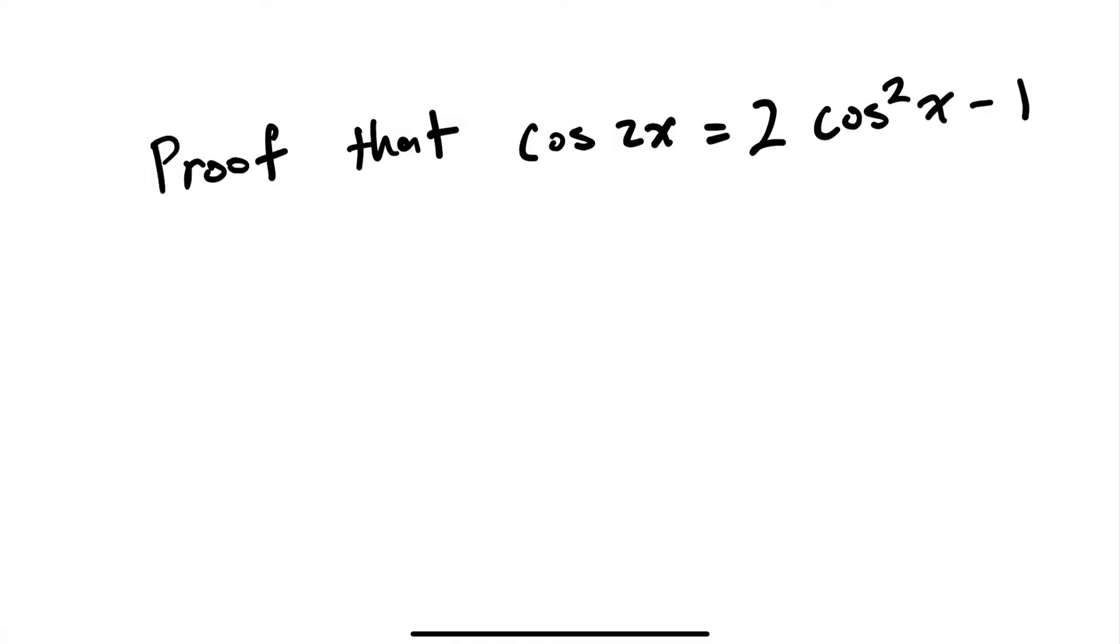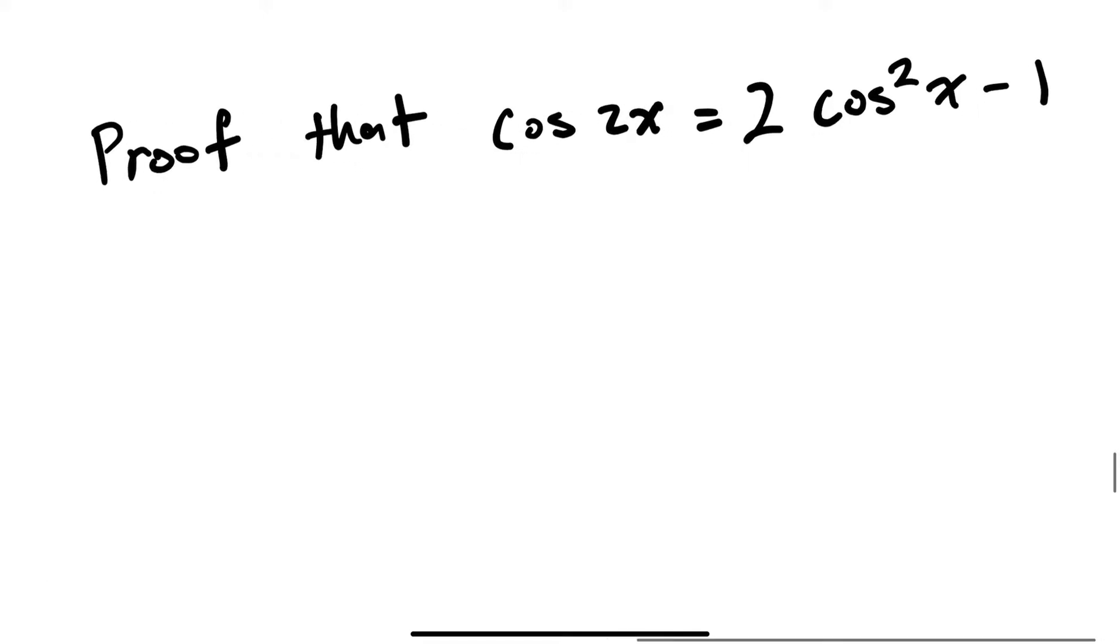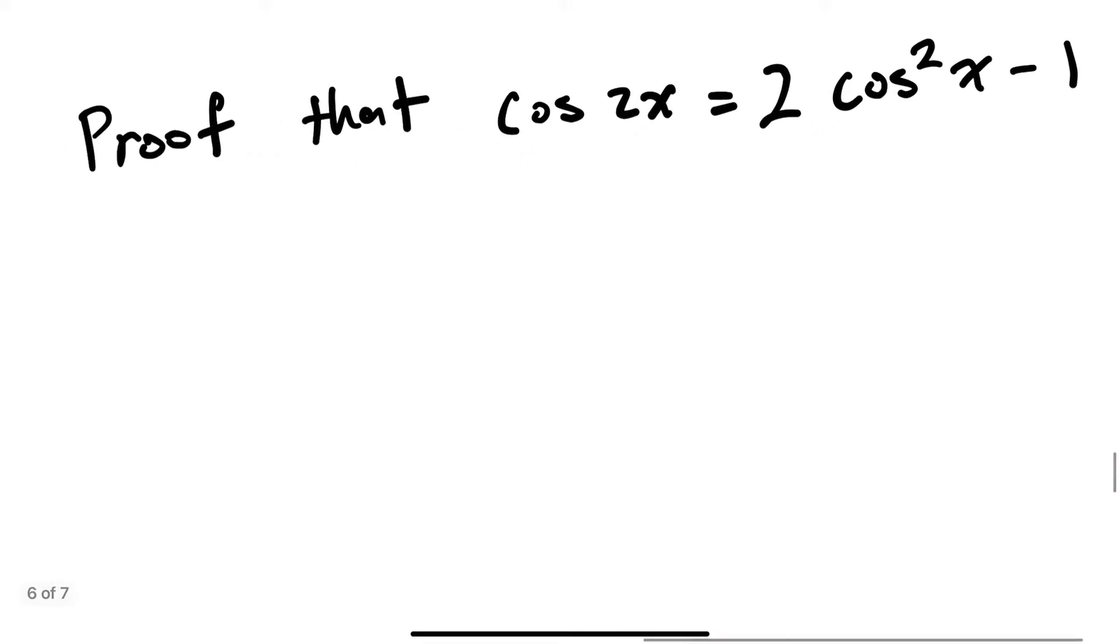Prove that cosine 2x equals 2 cosine squared x minus 1. So cosine 2x is basically this,